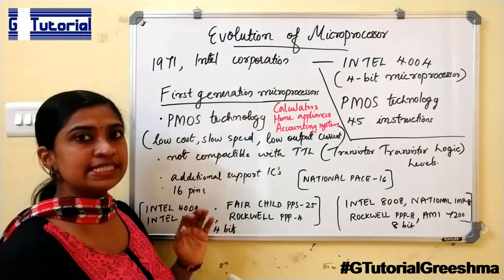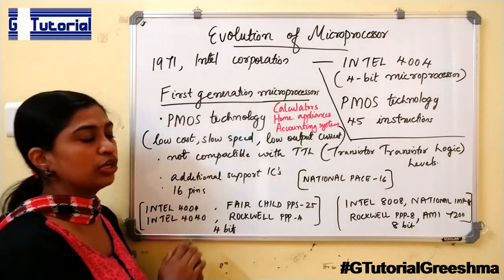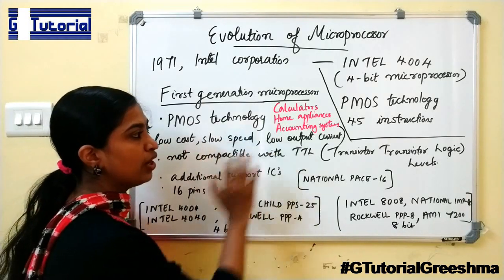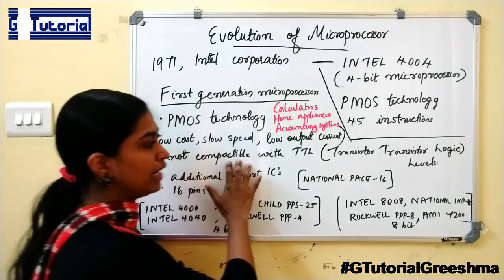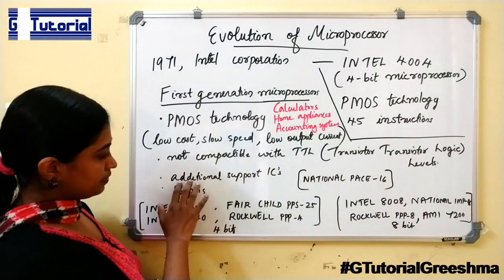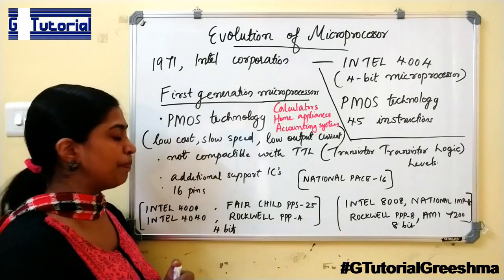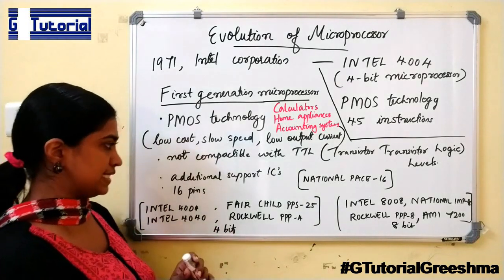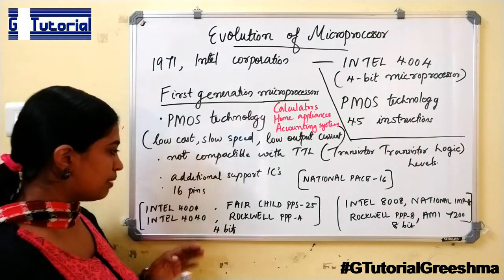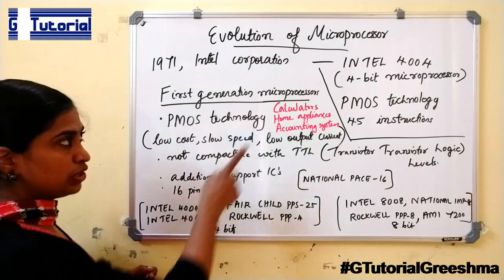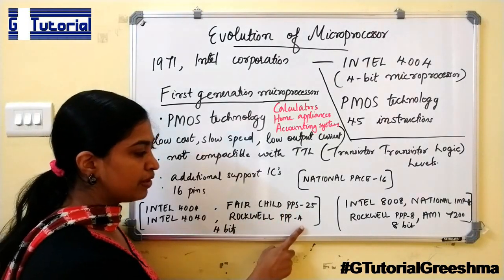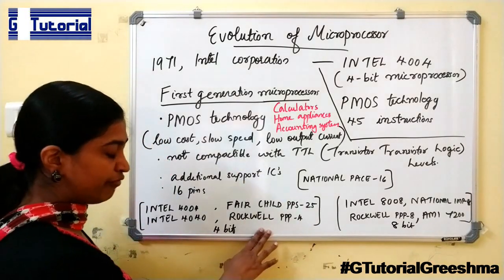First generation microprocessors mainly used PMOS technology, which provided low cost, slow speed, and low output current. The disadvantage was that they were not compatible with TTL — transistor-transistor logic — levels. They also required additional support ICs for a complete system and had only 16 pins. Some first generation microprocessors include Intel 4004, Intel 4040, Fairchild PPS-25, Rockwell PPS-4, and National IMP-4.